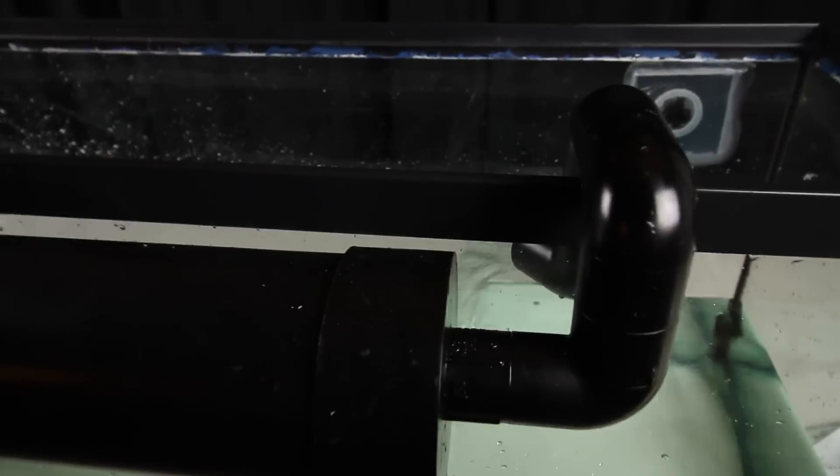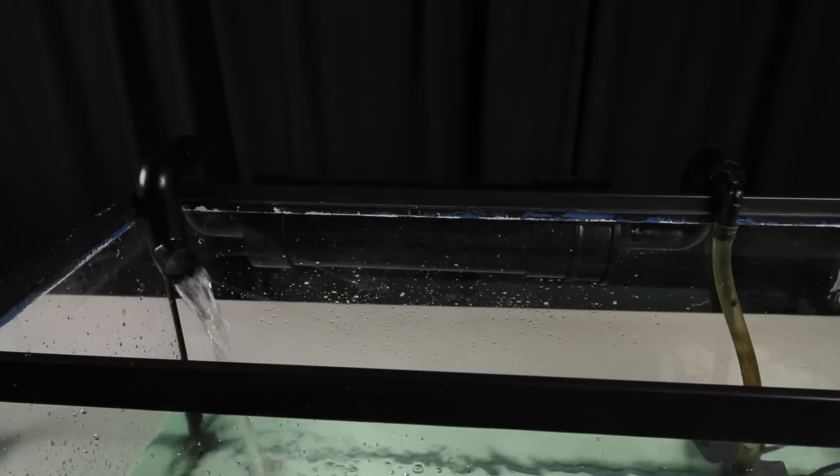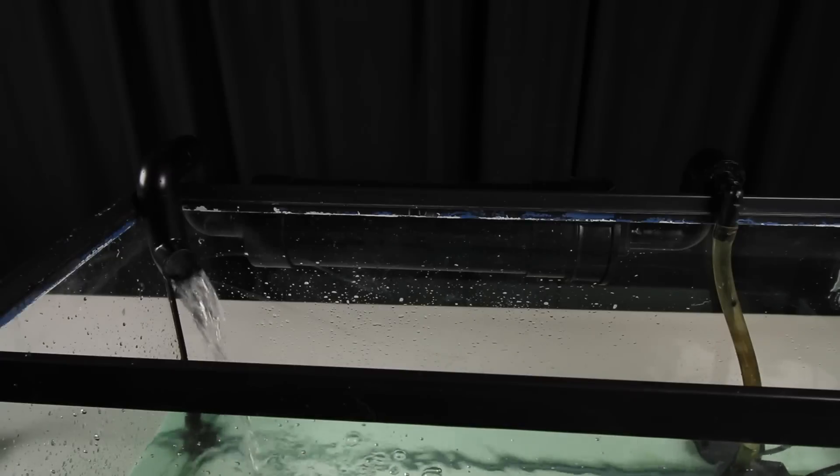Now, you probably have some concerns about the weight of something like this being on your tank, and it's nothing to really worry about. In fact, hang-on-the-back refugiums have been used for many years and weigh a lot more than one of these do. Based on its ability to be as big or as small as you like, these can be used on almost any reasonably-sized aquarium.